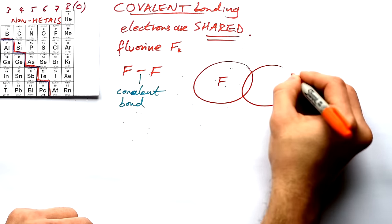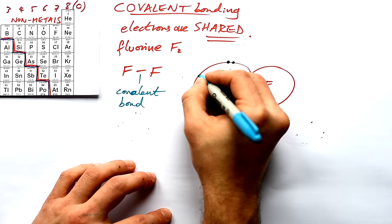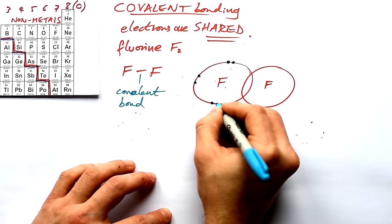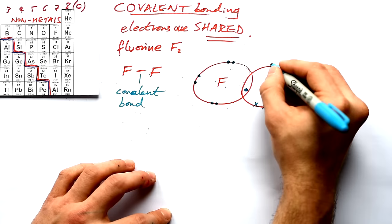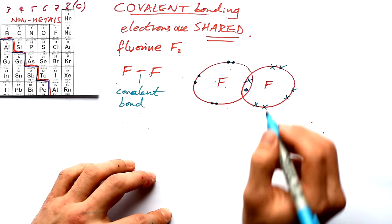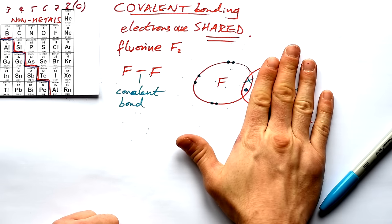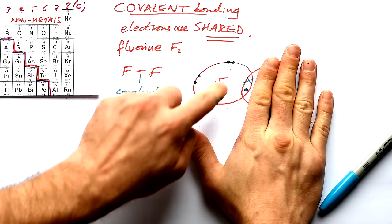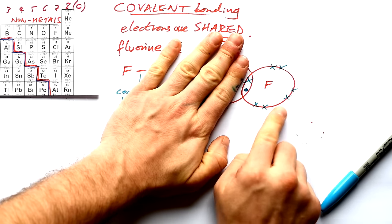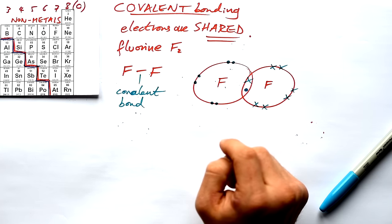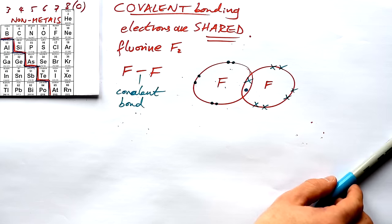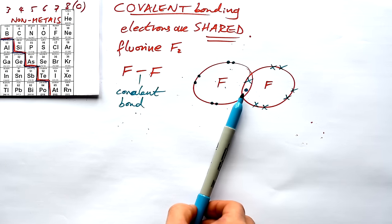Let's draw the F2 dot and cross diagram. Fluorine has seven electrons, and so does the other fluorine, but one electron from each is shared between them. Checking the left fluorine: counting all electrons including the shared pair gives eight — yes, a full outer shell. Same for the right fluorine. Just by sharing one electron each, they both achieve a full outer shell. Whenever you have a covalent bond, you always have a dot-cross electron pair.